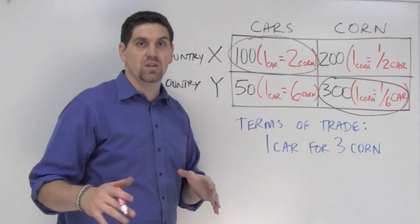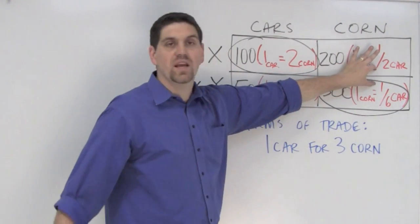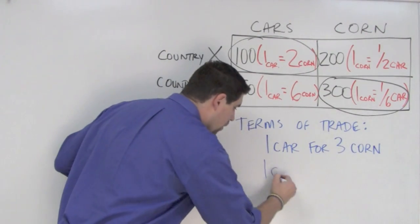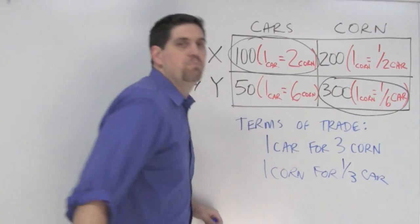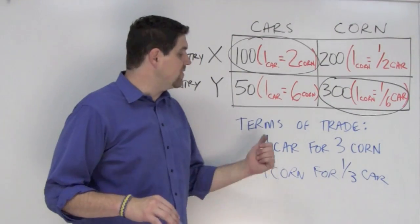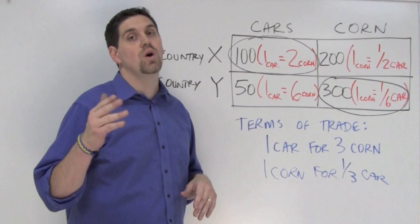Now, the same thing applies over here. Any number between one-half and one-sixth works. So, one corn for one-third a car would benefit both countries. Now, Terms of Trade questions are more likely to be asked on macro tests as opposed to micro tests.